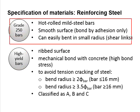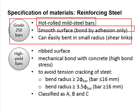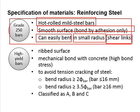Grade 250 is a hot rolled mild steel. It has a smooth surface, is easily bent, and is normally produced in small diameters of less than 10 mm. It is normally used as stirrups.